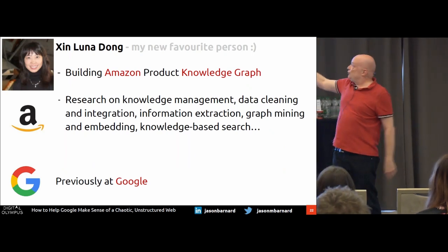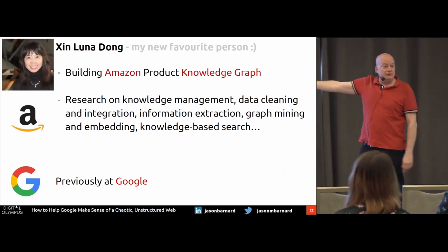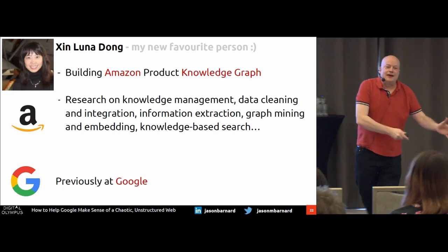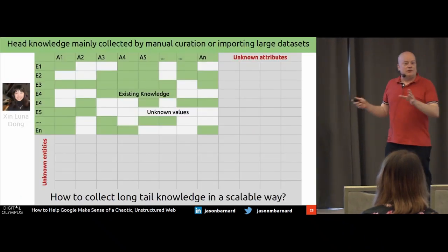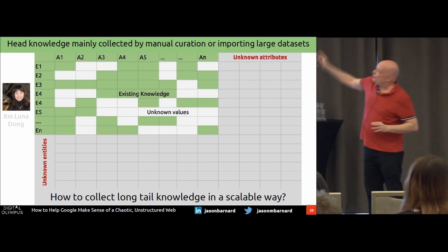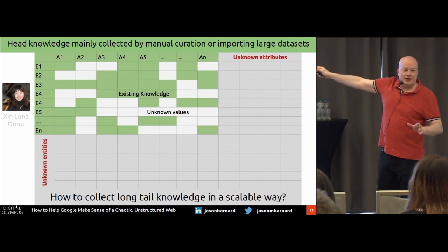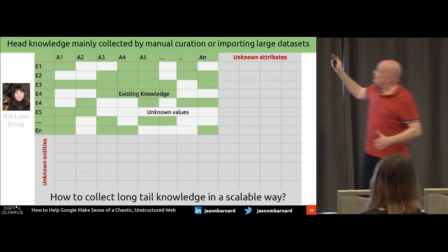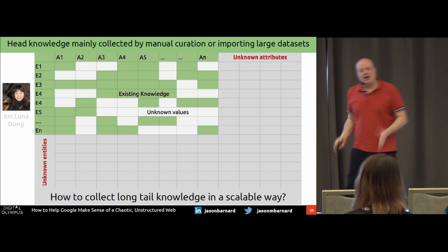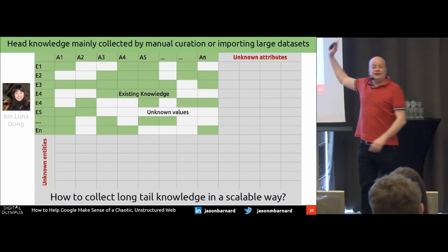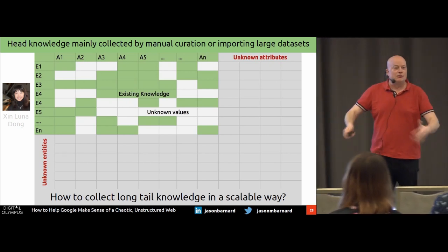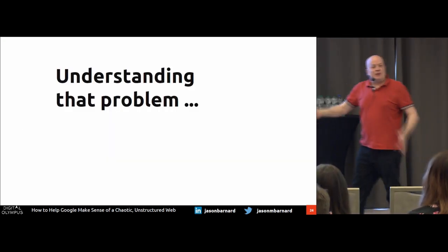This lady was working at Google — now she's at Amazon. She started the idea of extracting data from the unstructured web. In the top right-hand corner: head knowledge — the stuff that has been curated and fact-checked by humans. Very important. We have an enormous amount of gray-area content that Google has no access to — it can't get the information because it cannot scale human validation. Understanding that problem is key.